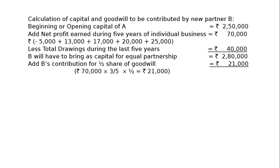Rs. 42,000 is the goodwill of the new firm. B will be contributing half, that is Rs. 21,000. The total goodwill is Rs. 42,000 — half is A's share and half is B's share. B has to pay half, that is Rs. 21,000.